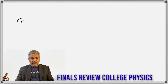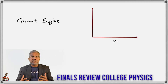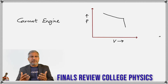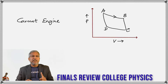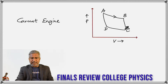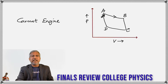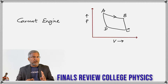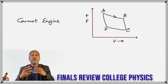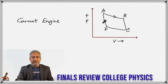First we have Carnot's engine, which is a heat engine. The heat engine takes heat from the source, converts part of that into work, and rejects the remaining to the sink. There are four processes: AB is an isothermal expansion, BC is an adiabatic expansion, CD is an isothermal compression, and DA is an adiabatic compression — two isothermals and two adiabatics, two expansions, two compressions. The useful work done in Carnot's engine is given by the area of ABCD.